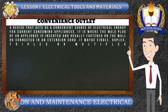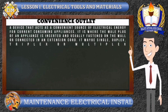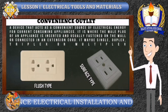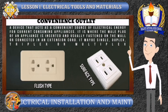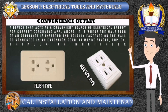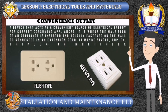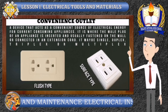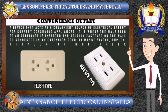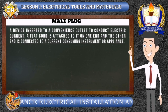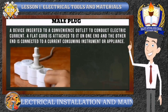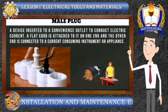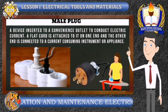Convenience Outlet is a device that acts as a convenient source of electrical energy for current-consuming appliances. It is where the male plug of an appliance is inserted and is usually fastened on the wall or connected in an extension cord. It may be single, duplex, triplex, or multiplex, and could be surface type or flush type. Male Plug is a device inserted into a convenience outlet to conduct electric current. A flat cord is attached to it on one end and the other end is connected to a current-consuming instrument or appliance.